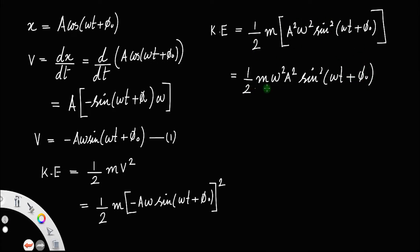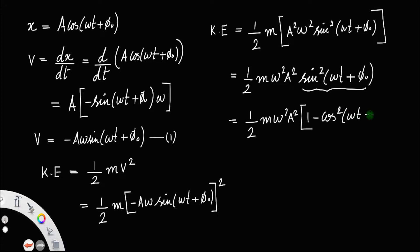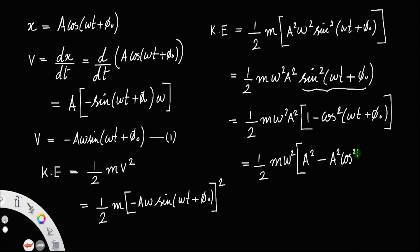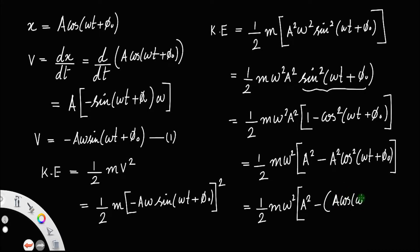This equation can also be written as ½m ω²A² sin²(ωt + φ₀). Now, sin²(ωt + φ₀) can be written using the identity sin²θ + cos²θ = 1, so sin²(ωt + φ₀) = 1 - cos²(ωt + φ₀). Taking A² inside the bracket gives ω²[A² - A²cos²(ωt + φ₀)]. This simplifies to ½m ω²[A² - (A cos(ωt + φ₀))²].